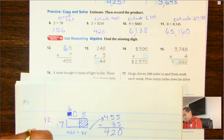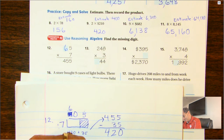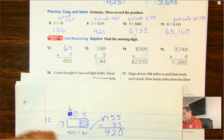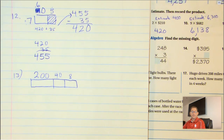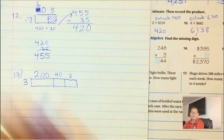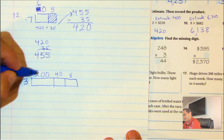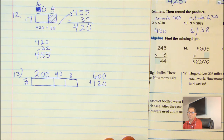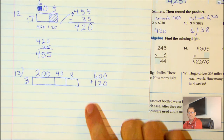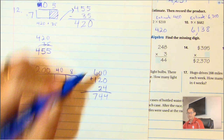Number 13: the model shows 200 plus 40 plus 8, each multiplied by 3. 3 times 200 is 600; 3 times 40 is 120 (12 tens); 3 times 8 is 24. Adding together: 4, 4, 7 — giving 744.